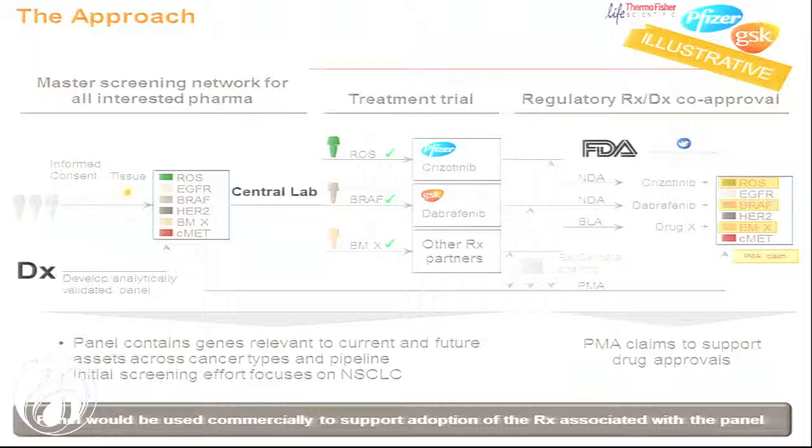As an illustration of the approach: because GSK and Pfizer are the two pharma partners involved, we are actively working to develop and validate a companion diagnostic based on a multi-analyte next-generation sequencing assay. The panel contains genes relevant to our current existing pipelines and takes into consideration other markers of interest in the different signaling pathways these drugs will target. Treatment trials are currently ongoing, and we're working actively with the FDA to determine the best path forward for developing this assay as a companion diagnostic.